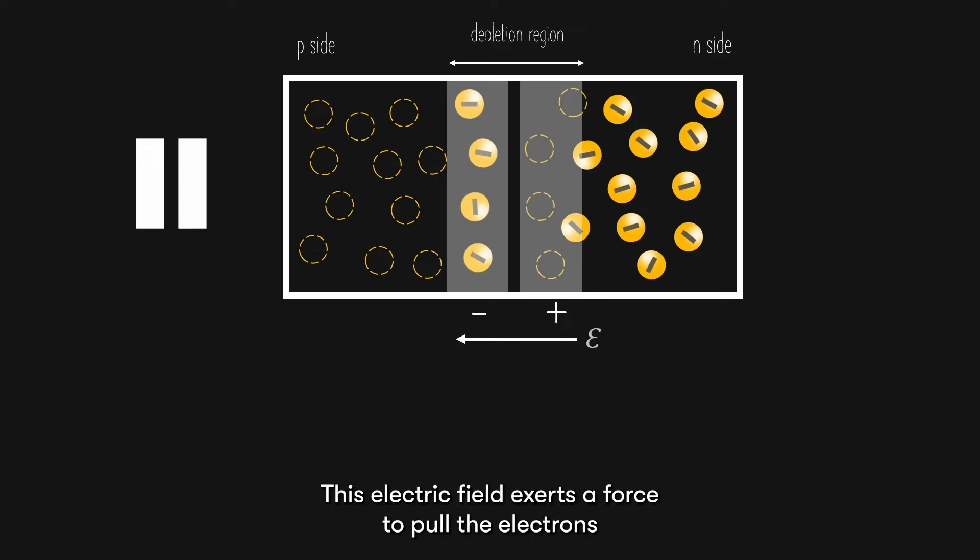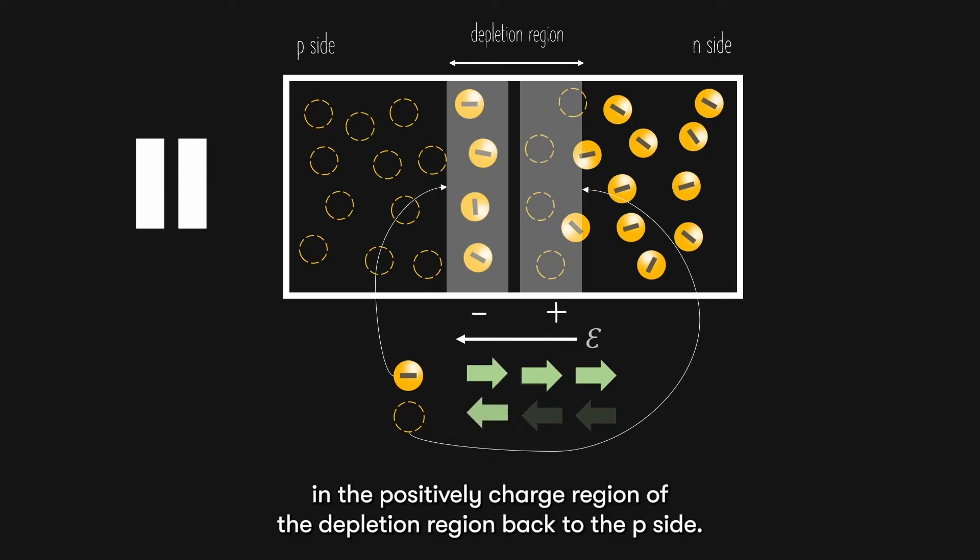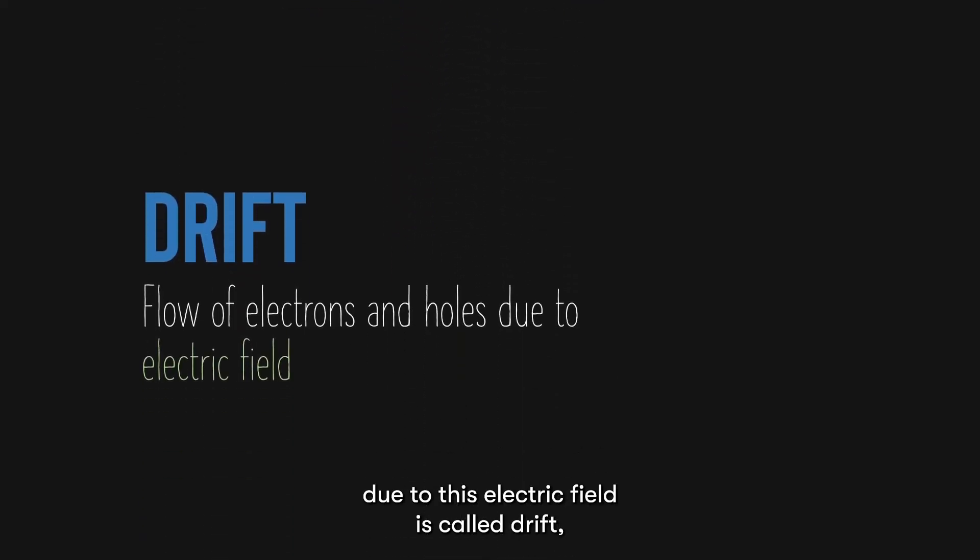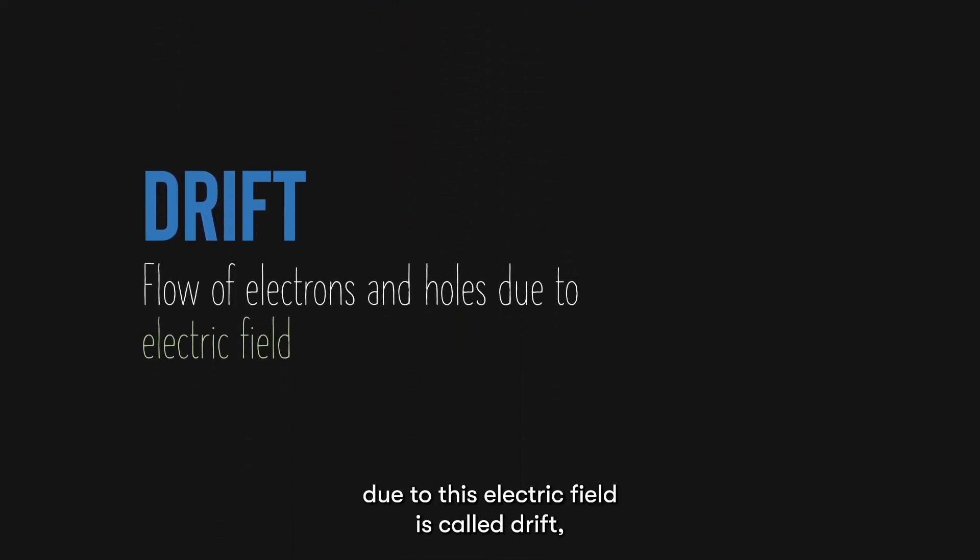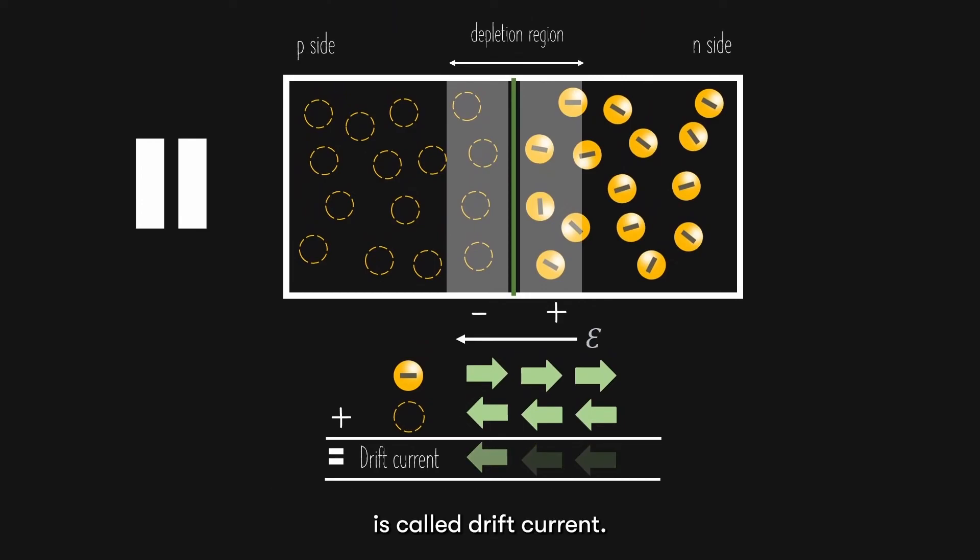This electric field exerts a force to pull the electrons in the negatively charged region of the depletion region back to the n-side, while the same electric field also exerts a force to pull the holes in the positively charged region of the depletion region back to the p-side. The force due to this electric field is called drift, which prevents further diffusion from happening. The movement of electrons and holes due to this electric field is called drift current.